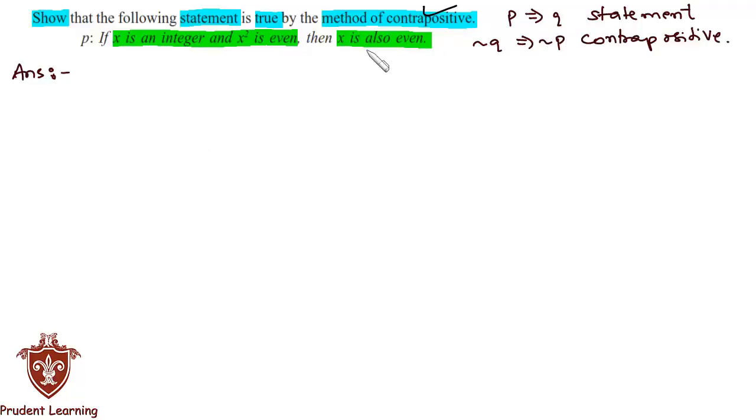To solve this question by the method of contrapositive, we need to have two statements. Therefore, we'll split the given statement into two component statements, where we'll call the first part as q and the second part as r.